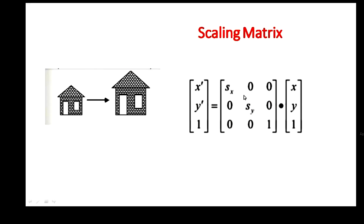Now we will see the scaling matrix: [Sx  0  0 / 0  Sy  0 / 0  0  1]. The x, y are the points in the original image, moved to the new coordinate x dash, y dash. If you multiply the scaling factor with the original coordinates, you will get the new coordinates. In the picture, the house is enlarged — the same image is there but in an enlarged version. That is called scaling, and how much it is enlarged depends upon the scaling factors.